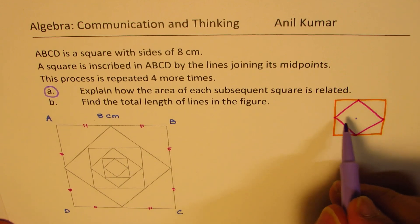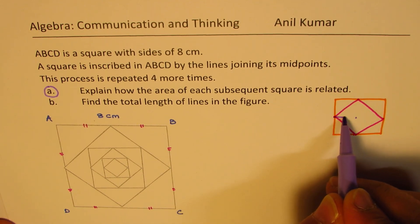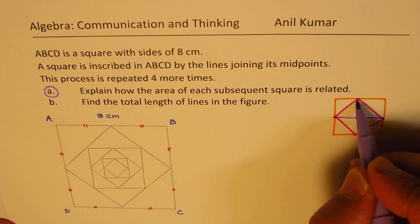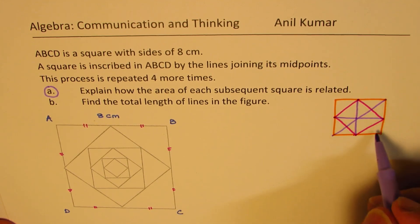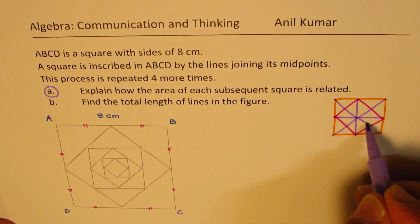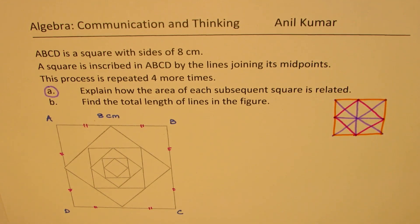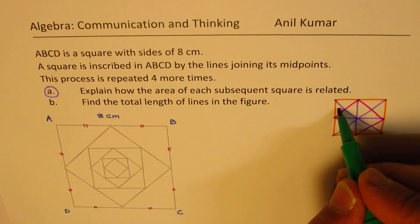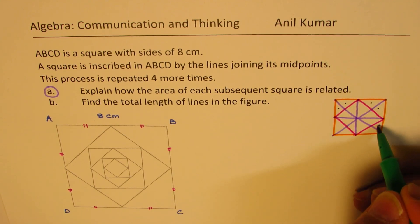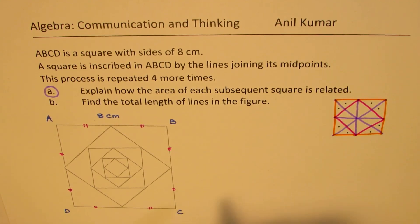The easy way to use geometry is we can actually connect these points. When you do that, you see that we have in the bigger square we have 1, 2, 3, 4, 5, 6, 7, 8.